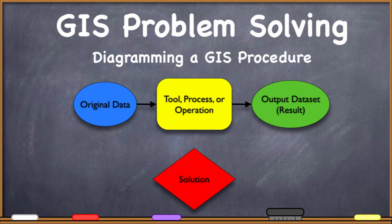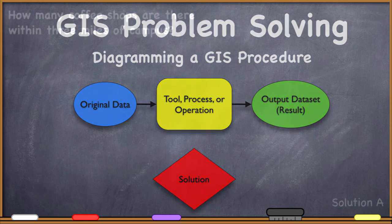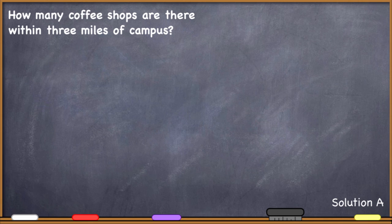Welcome back. In this video we're going to move forward and start applying the methodology for diagramming out our GIS procedures to a very simple problem that should give you an idea about what we're going to be doing here. Our first problem is: how many coffee shops are there within three miles of campus? This is a simple problem, but it's a perfectly good GIS problem — one that we may want our computers to solve.